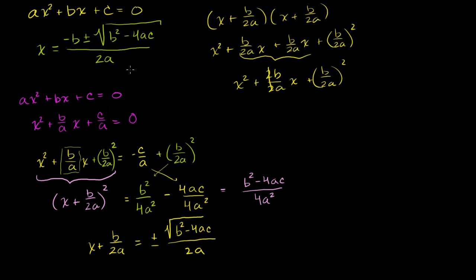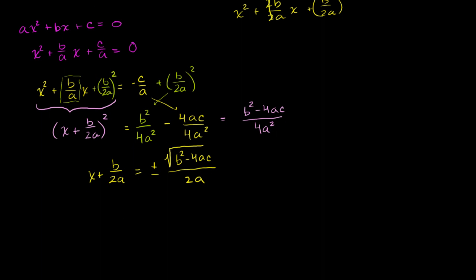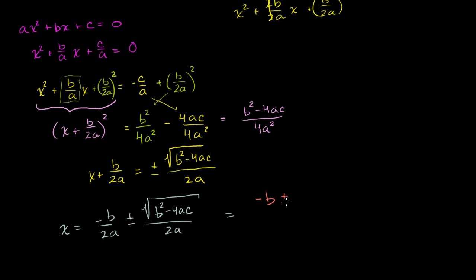This is looking very close to the quadratic formula — we have b squared minus 4ac over 2a. Now we just have to subtract b over 2a from both sides. You get x is equal to negative b over 2a plus or minus the square root of b squared minus 4ac over 2a, which with a common denominator gives us negative b plus or minus the square root of b squared minus 4ac, all of that over 2a. By completing the square with general coefficients a, b, and c, we were able to derive the quadratic formula.